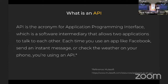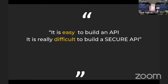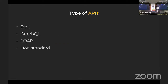My favorite interpretation of what an API is comes from MuleSoft: it stands for Application Programming Interface — a software intermediary that allows two applications to talk to each other. We all know what an API is. It's a really easy way to interact with a data layer. It's used once, used everywhere. Developers are lazy — keep that in mind. They're meant to be seen by computers, not people. It's easy to build an API; it is really, really difficult to build a secure one.